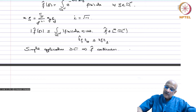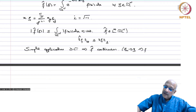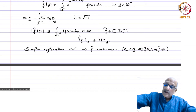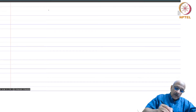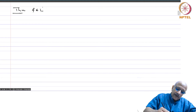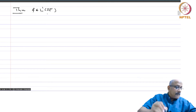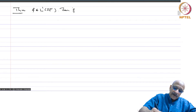To verify continuity: take ξ_n converging to ξ, then show that f-hat(ξ_n) converges to f-hat(ξ). This is a direct application of the dominated convergence theorem and can be done as a simple exercise. In fact, we have something much stronger, which we will now prove. Theorem: if f is in L1 of Rn, then f-hat is uniformly continuous.